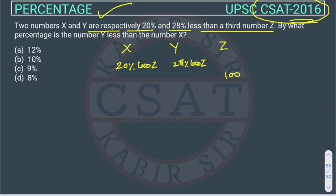X will be 20% less than Z. As I told you, 100% of some number is that number itself. If you want to calculate 20% less, we can take 80% of that number.